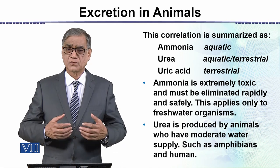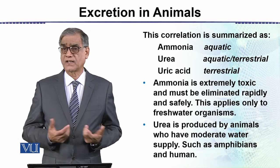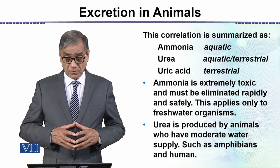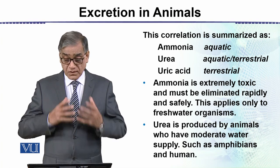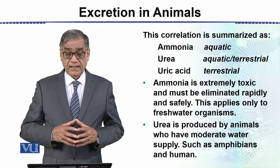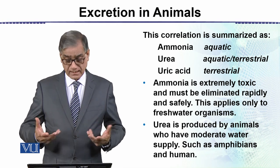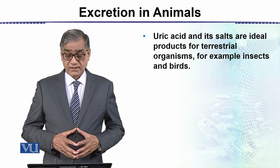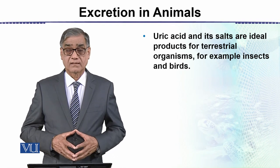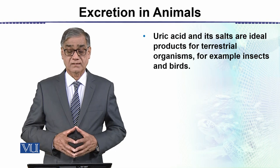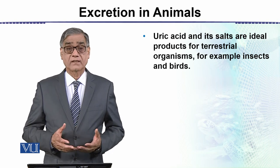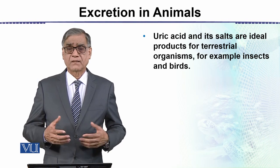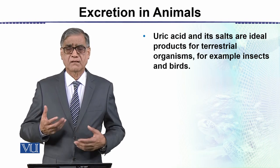Ammonia is extremely toxic and must be eliminated rapidly. Urea is produced by animals that have a moderate water supply, such as amphibians, humans, and many other animals. Uric acid and its salts are ideal excretory products for terrestrial organisms, for example insects and birds.